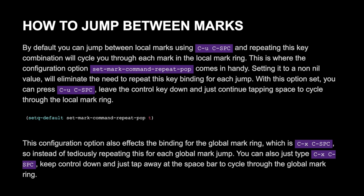This configuration option also affects the binding for the global Mark ring, which is ctrl+x ctrl+space. So instead of tediously repeating this for each global Mark jump, you can also just type ctrl+x ctrl+space, keep the control key down, and just tap away at the spacebar to cycle through the global Mark ring.